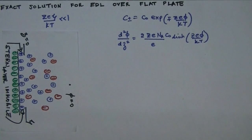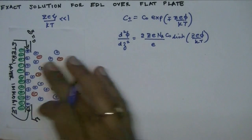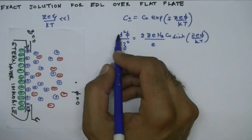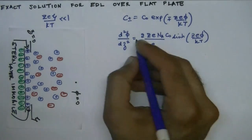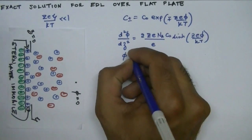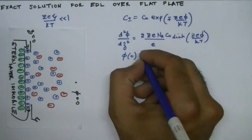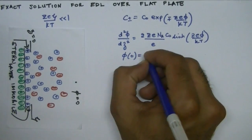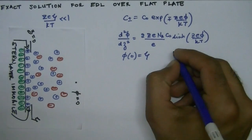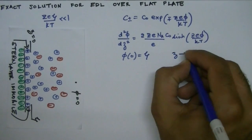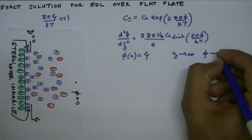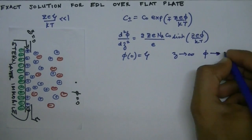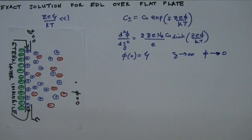This equation was derived in the previous lecture. Now we solve it analytically with boundary conditions: the potential at z equals 0 is the zeta potential, and as z tends to infinity the potential in the bulk solution tends to 0.